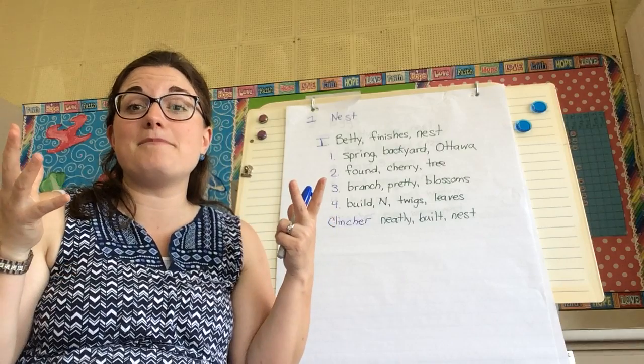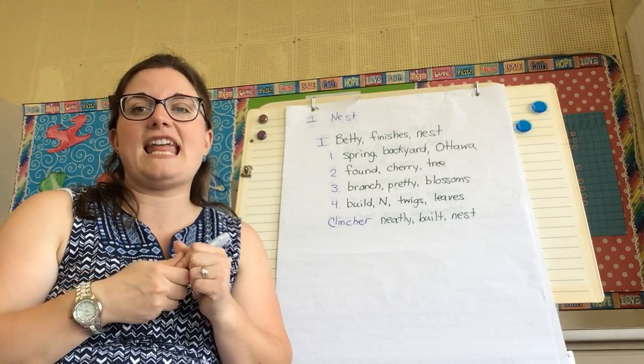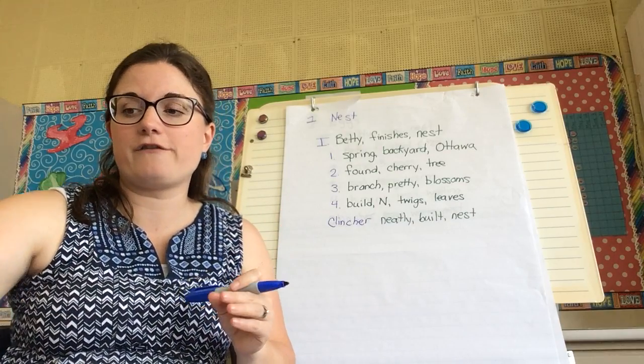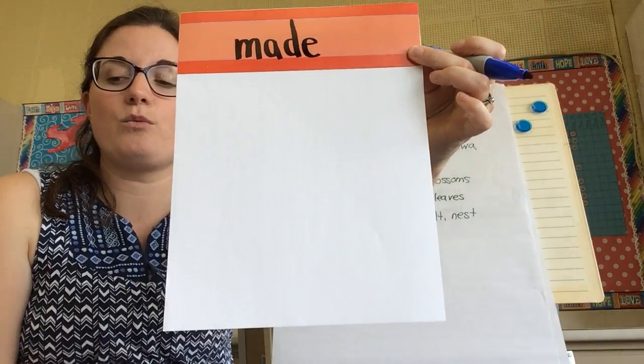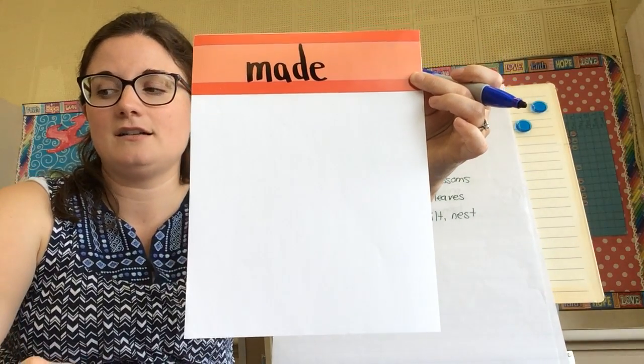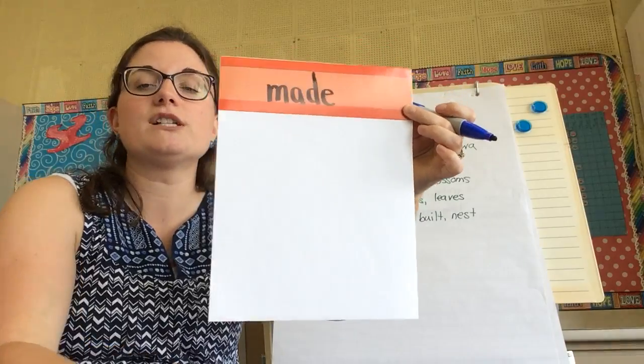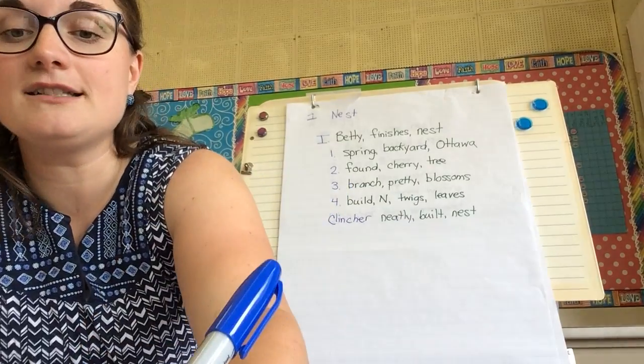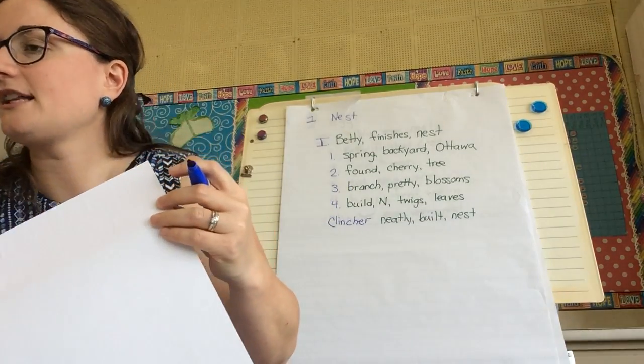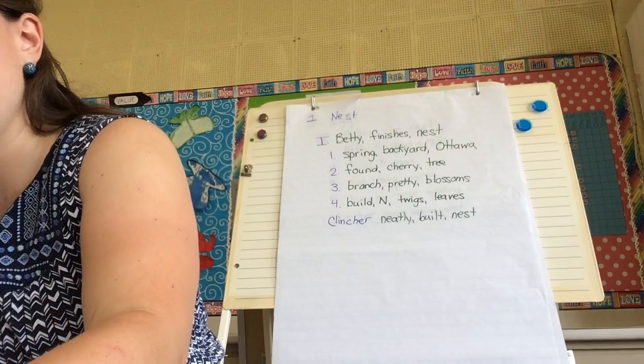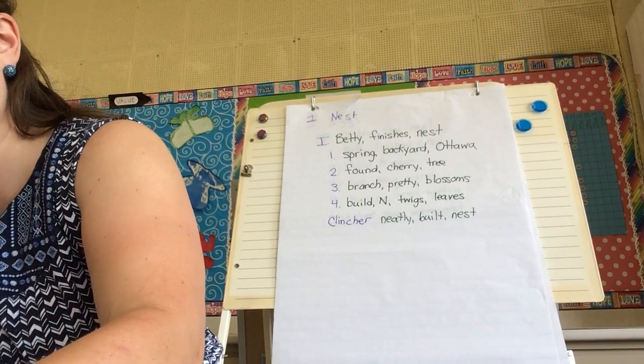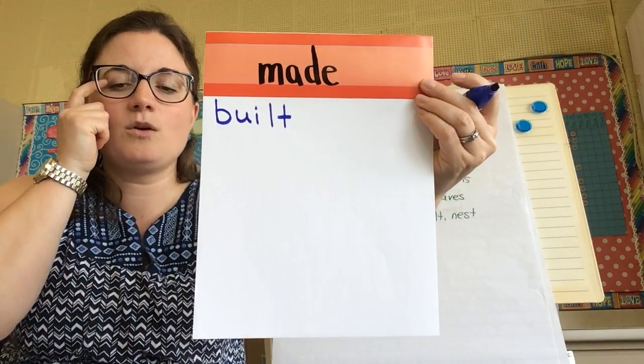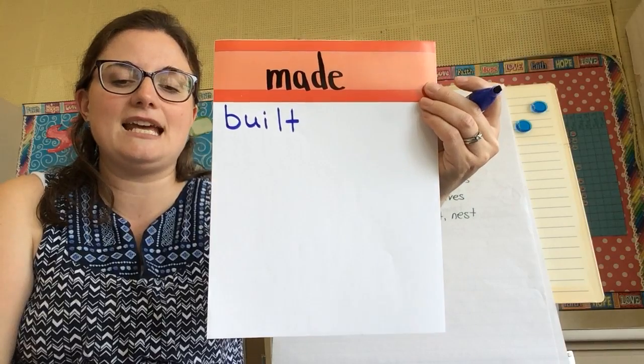Now the first picture is that our bird is building a nest or made a nest and to help us come up with our strong verb for our first one we're going to make a word bank for the word made. So we're going to think of other words for made. Well I kind of already put one in our keyword outline. I said built. So that's one way that we can say made a nest is built a nest. What are some other ways that you can say the word made a nest?